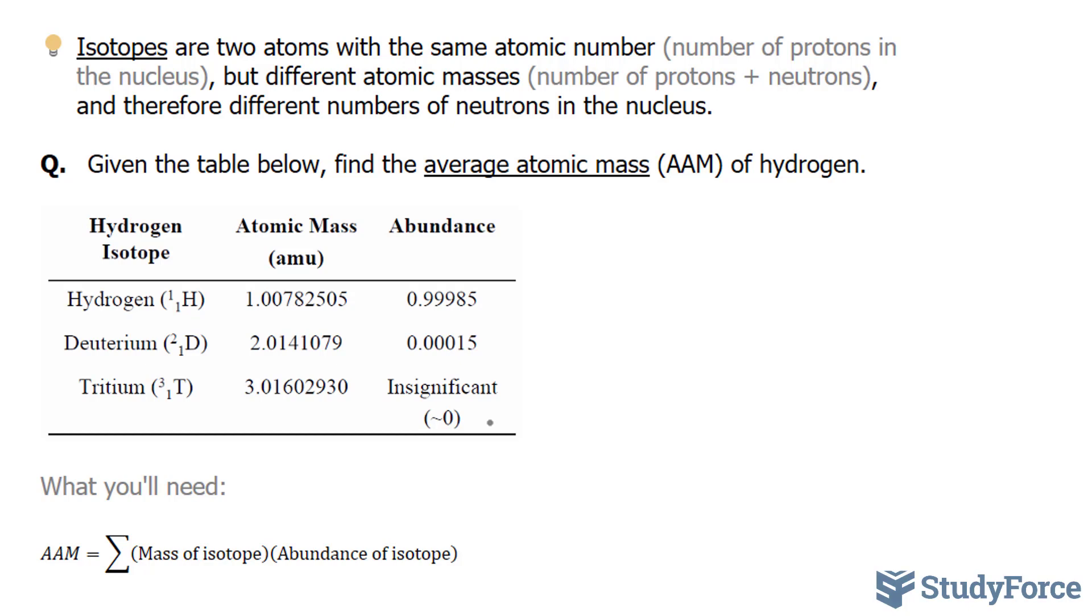So let's go ahead and answer this. Hydrogen has three isotopes: hydrogen, deuterium, and tritium. So to calculate the average atomic mass, I'm going to take this number and multiply it to its abundance, and then add the product of this number to that number, and the same thing here.